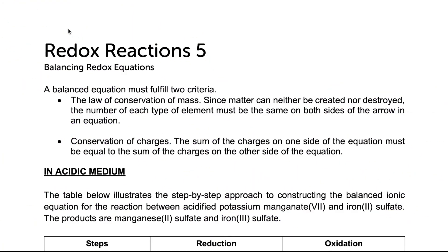In this video we shall take a look at how to balance redox equations. There are two golden rules: number one, every equation must obey the law of conservation of mass, meaning the number of atoms of each element must be the same on both sides. The second golden rule is that the number of charges must also be the same. Depending on whether the reaction is carried out in acidic or alkaline medium, there are different methods to balance the redox equation.